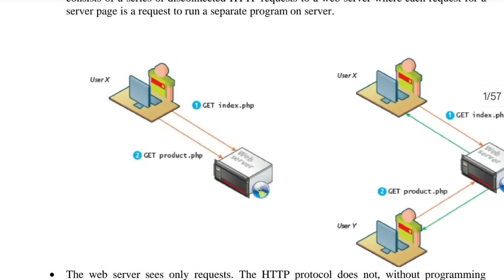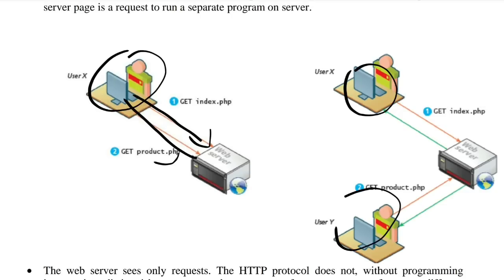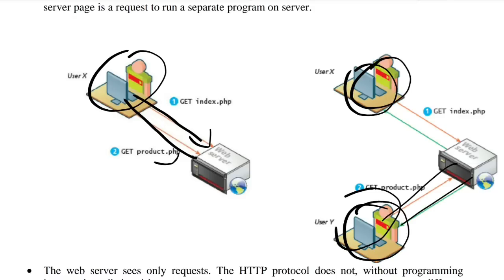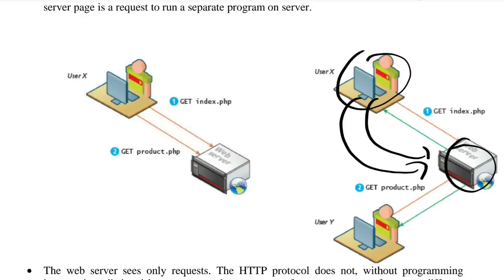There are two users, user X and user Y. User X is making a request to the server — like on a shopping website, user X is making a request to buy something, and user Y is also making another request. But if user X makes a second request, the web server will not know whether it is user X or any other user making that second request — that is the problem of state in web applications.